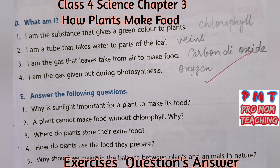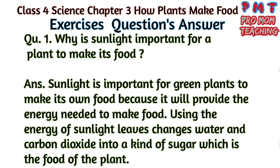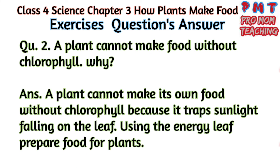Answer the following questions. Question 1: Why is sunlight important for a plant to make its food? Answer: Sunlight is important for green plants because it provides the energy needed to make food. Using the energy of sunlight, leaves change water and carbon dioxide into a kind of sugar, which is the food of the plant. Question 2: A plant cannot make food without chlorophyll – why? Answer: A plant cannot make food without chlorophyll because it traps the sunlight falling on the leaf, and using that energy, leaves prepare food for plants.